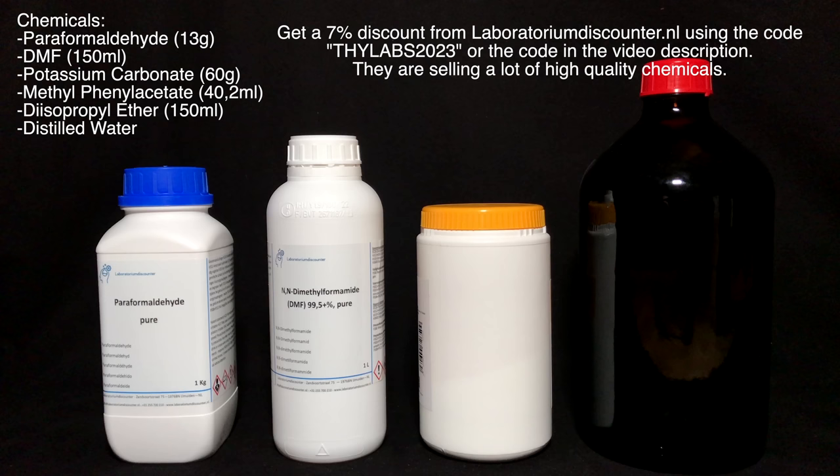To make atropic acid, the precursor to tropic acid, we are going to need the following chemicals: pyrophomaldehyde, DMF, potassium carbonate, and phenylacetic acid methyl ester.